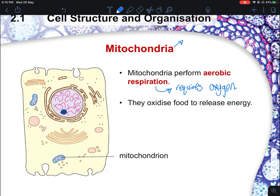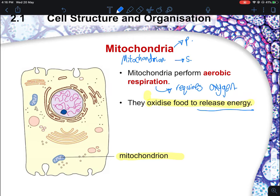Do take note that 'mitochondria' is the plural form — in the singular form, you call it 'mitochondrion.' This is very crucial for labeling, as many students make mistakes due to spelling. What happens is the mitochondria oxidize food to release energy. The proper word to use is that mitochondria 'releases' energy, not 'produces' energy. If asked for its function, say mitochondria are involved in aerobic respiration and oxidize food to release energy.